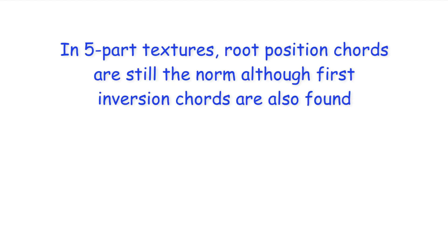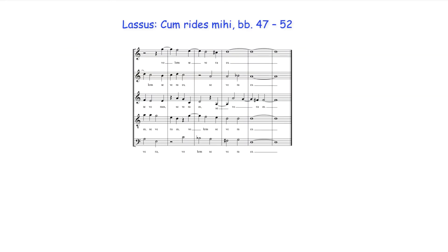In five-part textures, root position chords are still the norm, although first inversion chords are also found. In the five-part section concluding this work, for example, Lassus uses a first inversion D major triad, which sounds as the final of D Dorian with a raised third. Use of a first inversion chord in this instance lessens the cadential quality of the A to D progression, which would here detract from the final cadence.